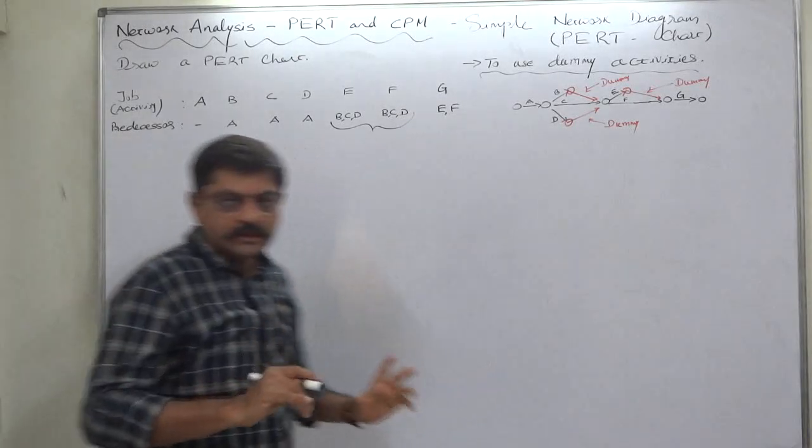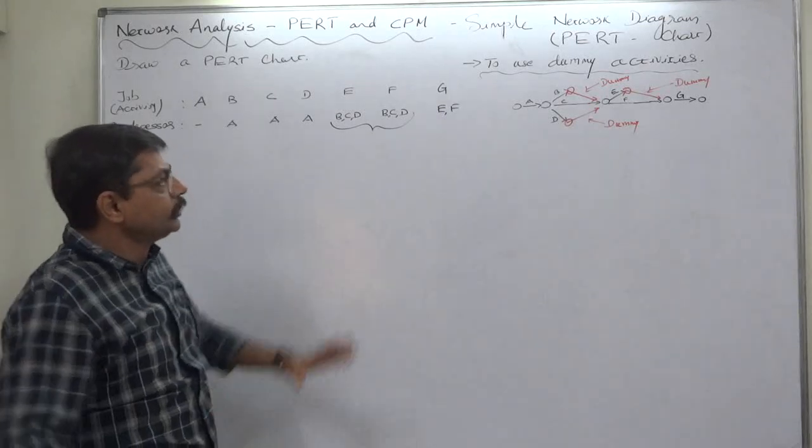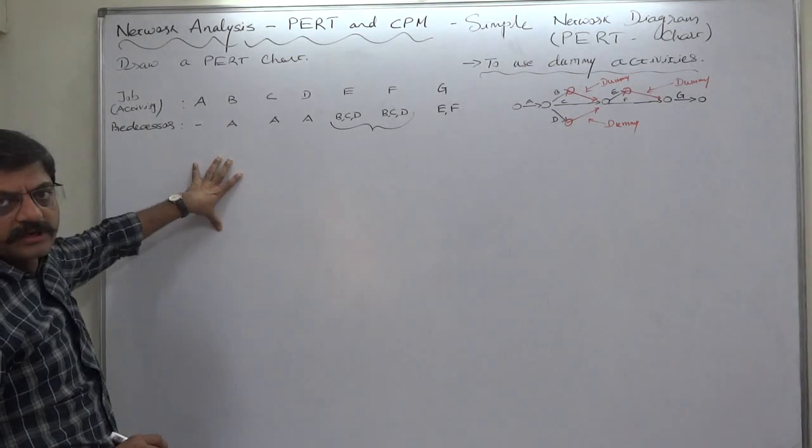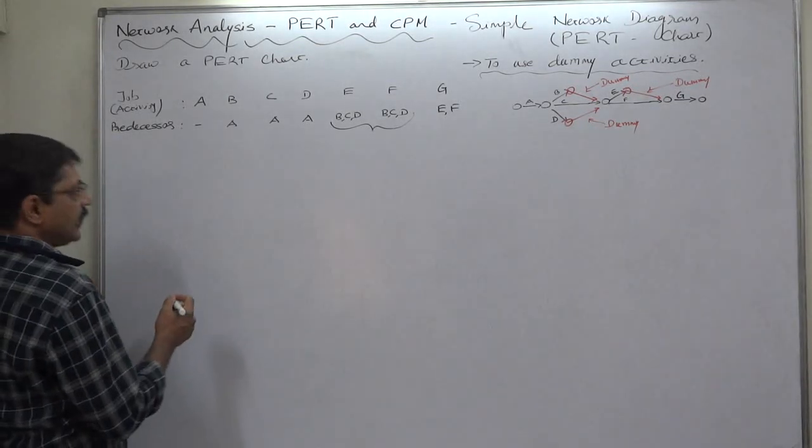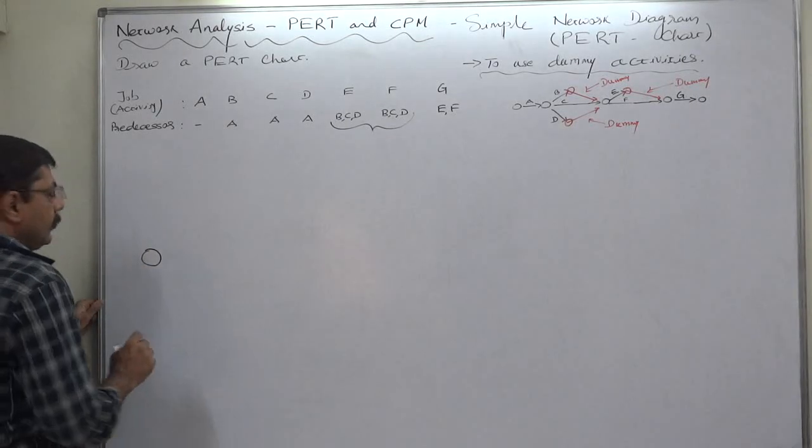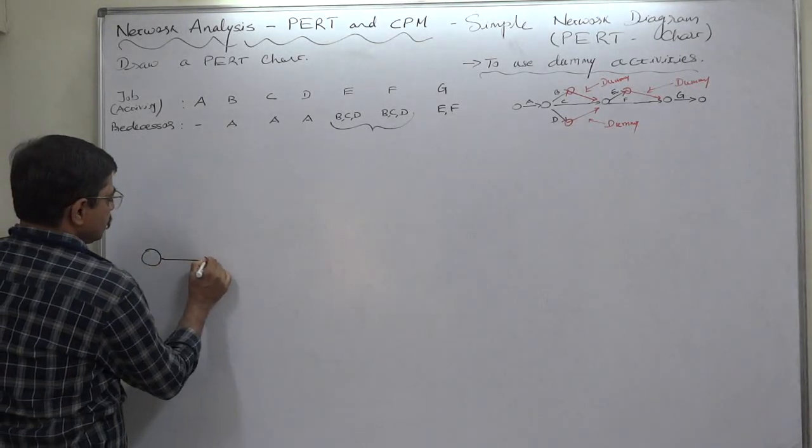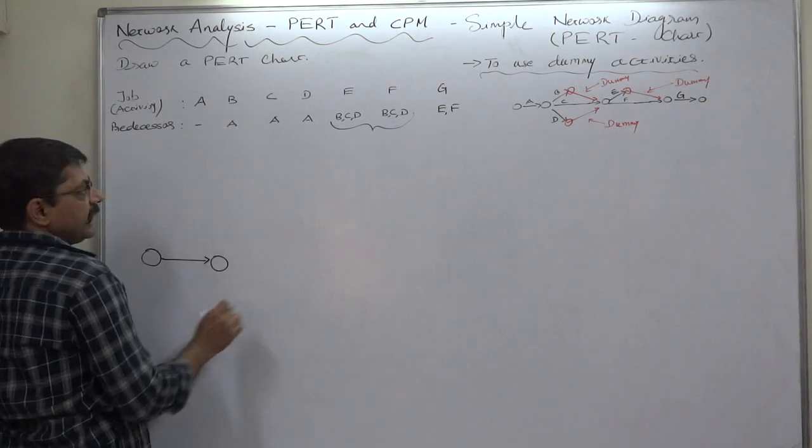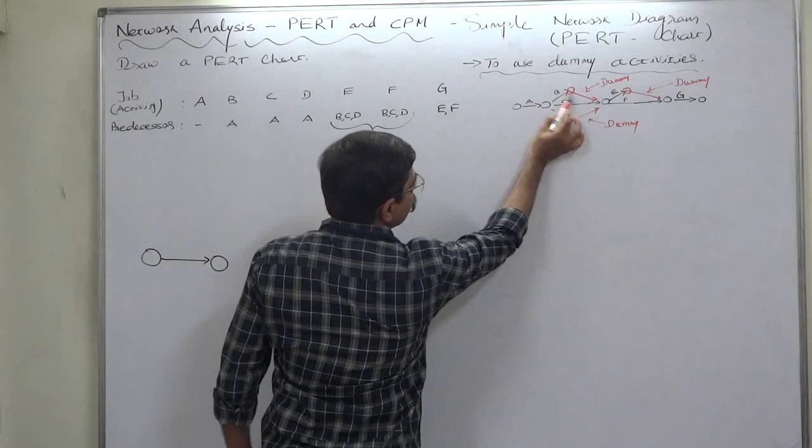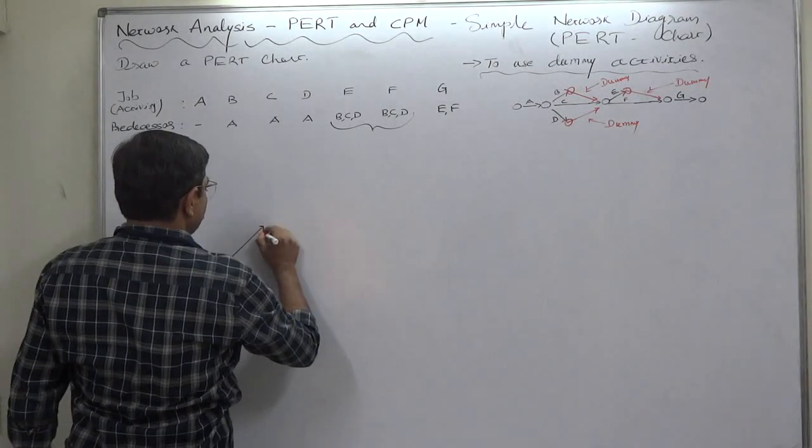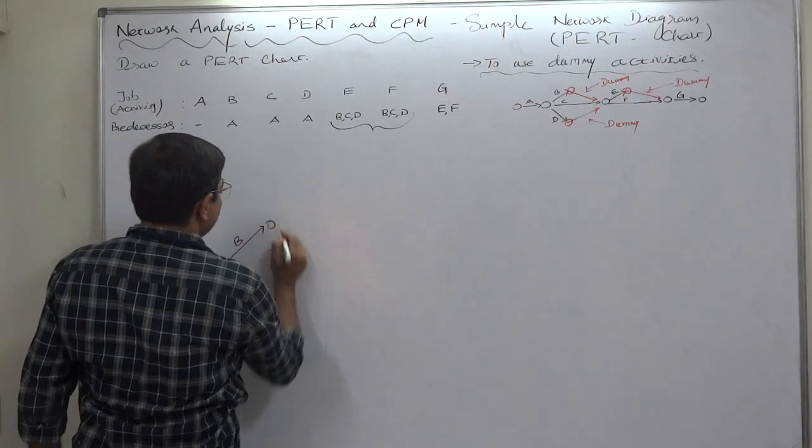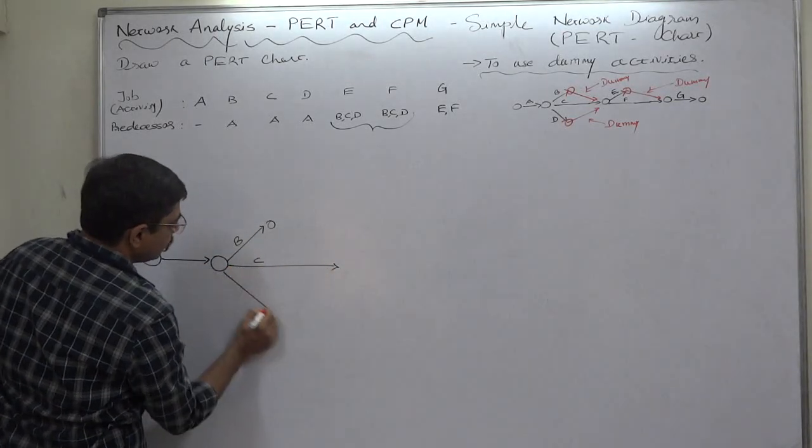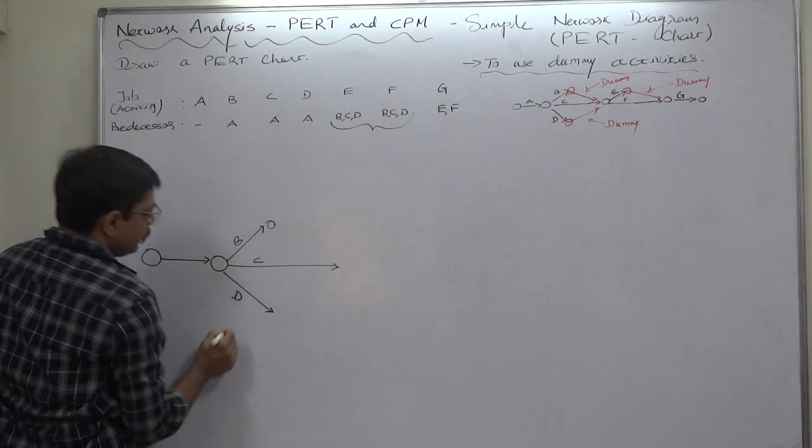And again G is alone as the ending activity. So how to use the dummy activities efficiently? To show this point I have preferred to select this sum for discussion on this stage. Let's start. One starting, only A as an initial activity, and now we are very much clear that we shall have to use dummies. So it's like this: B, C, and D. Yes, we have to use dummies.